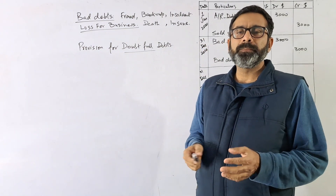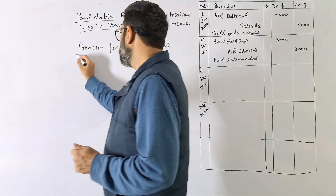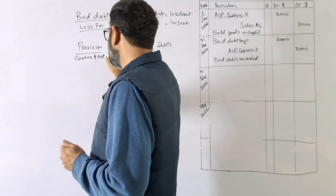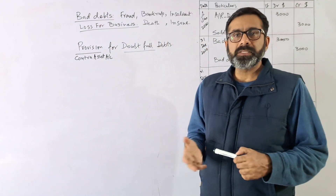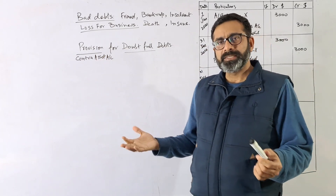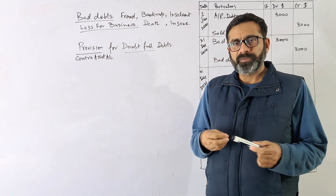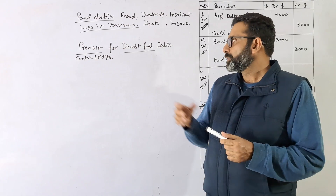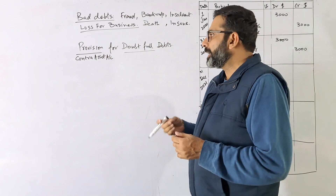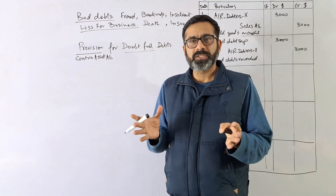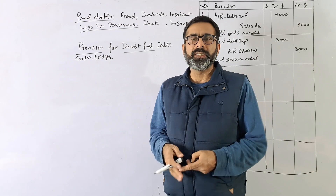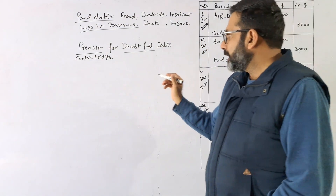Provision is simply a contra asset account. We have receivables — debtors — and the provision is the contra asset account. The receivable is the asset, but you are unable to recover some of the money. The provision for doubtful debts can also be called uncollectable debts, provision for uncollectable debts, or provision for doubtful debts. These terms can be used interchangeably.